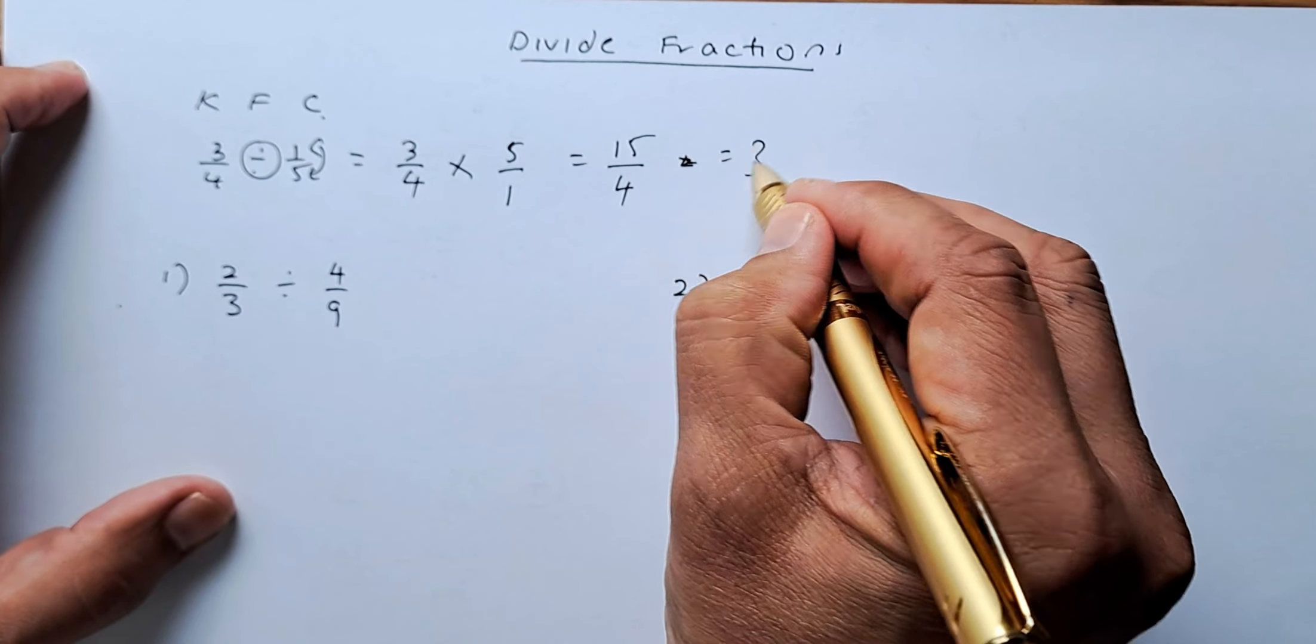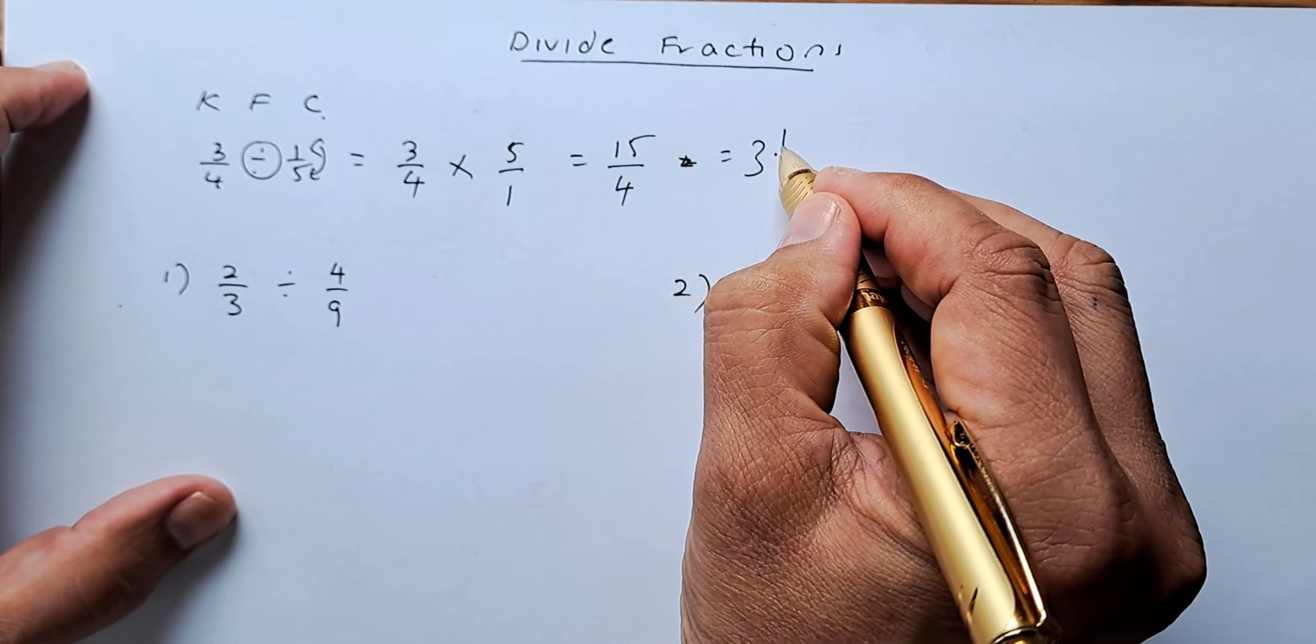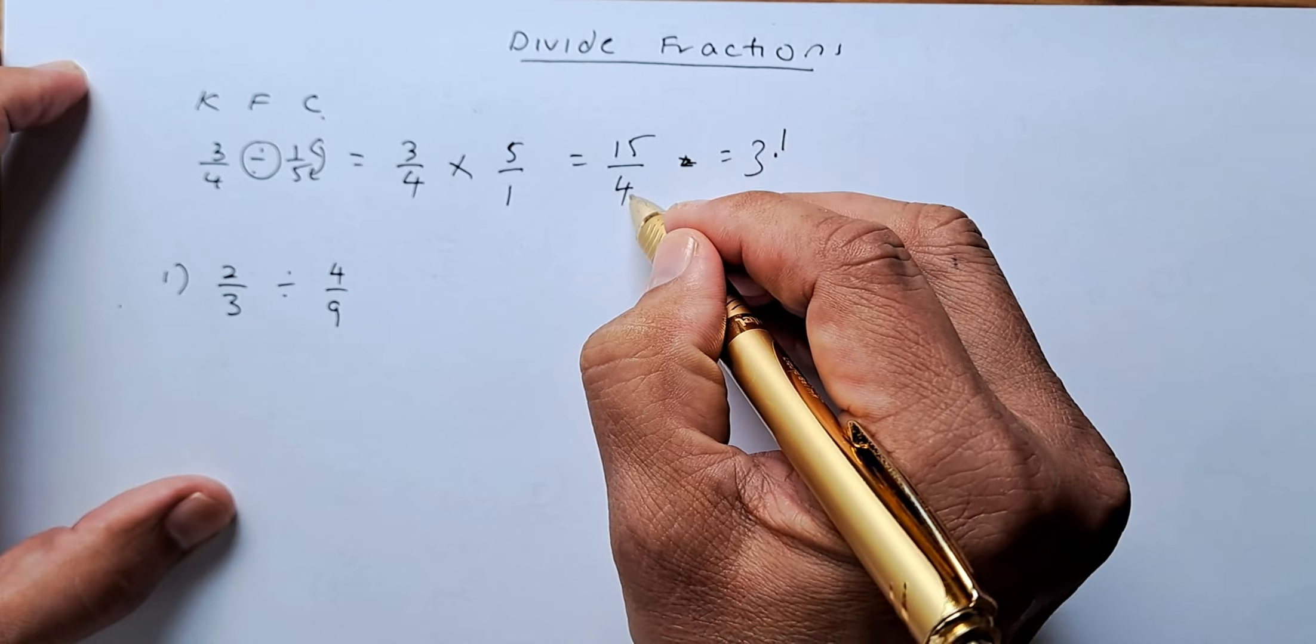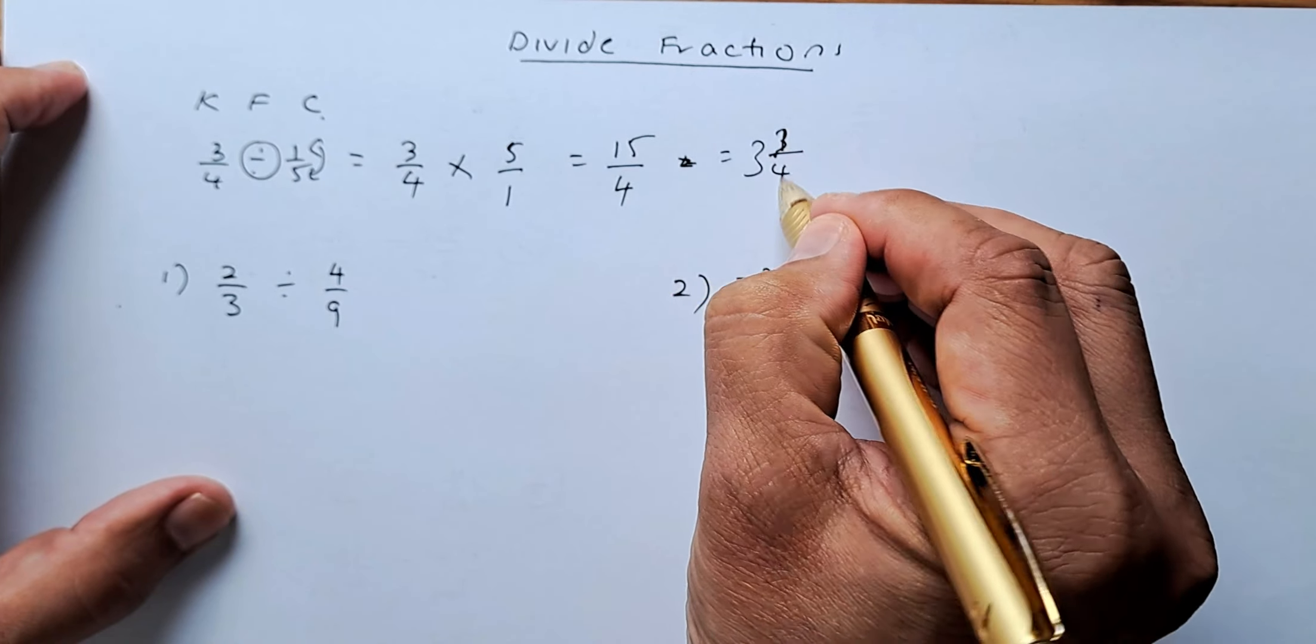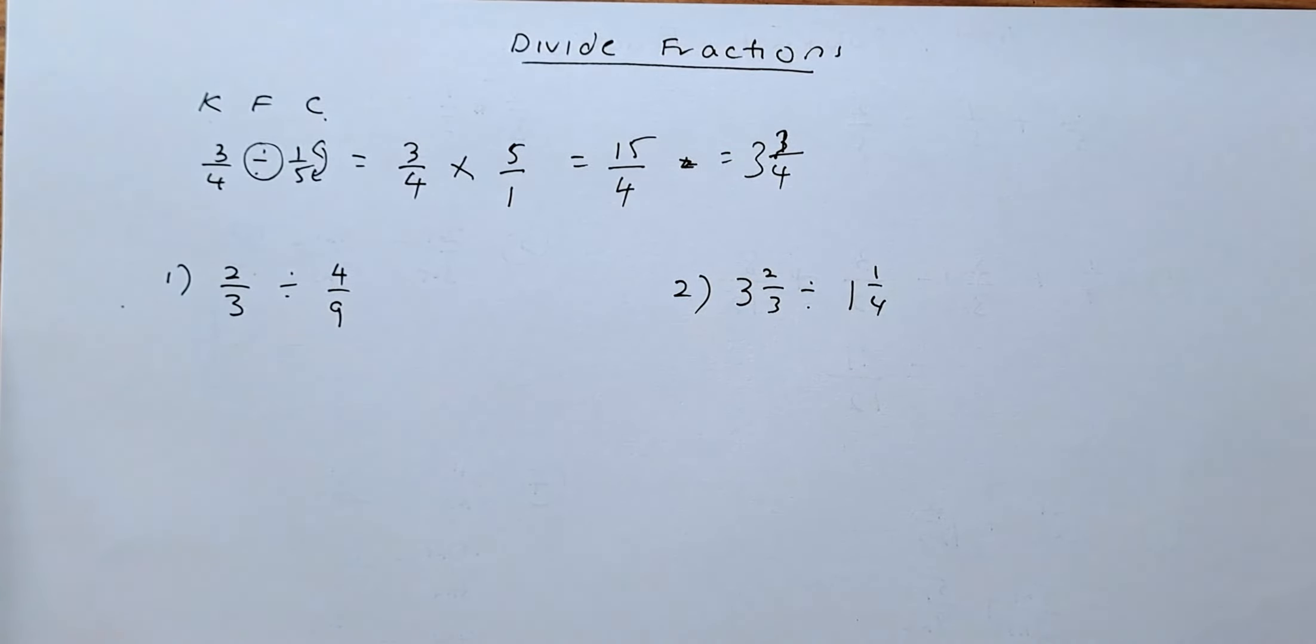And simplify them. It's going to be 3 and 3 quarters. That will give you 15 over 4.